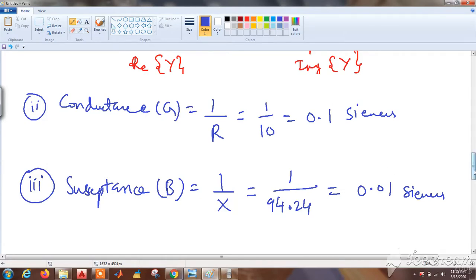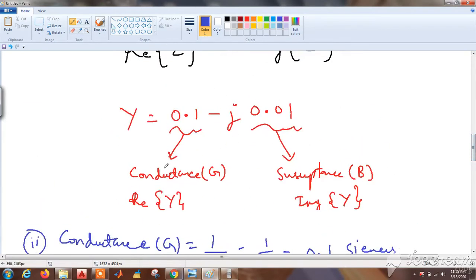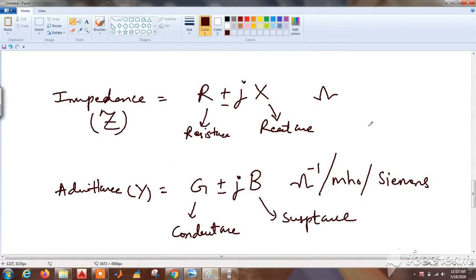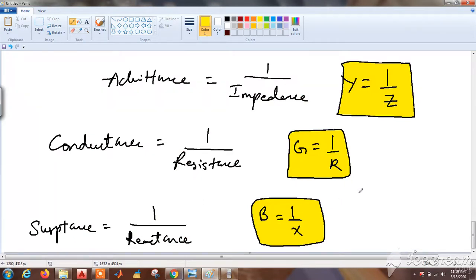We can write impedance and admittance in this format: admittance is G plus or minus jB, where G is conductance and B is susceptance, and the units are ohm inverse or mho or siemens. Please remember, admittance is 1 by impedance, conductance is 1 by resistance, and susceptance is 1 by reactance.